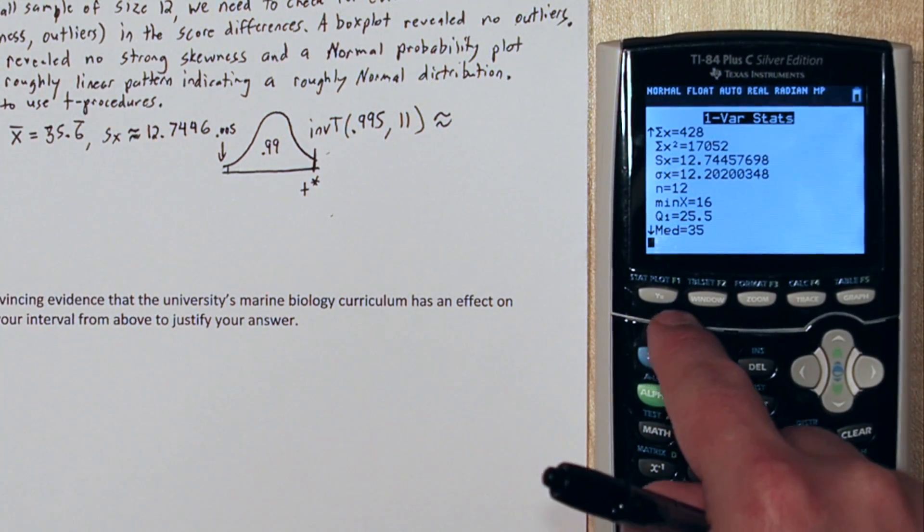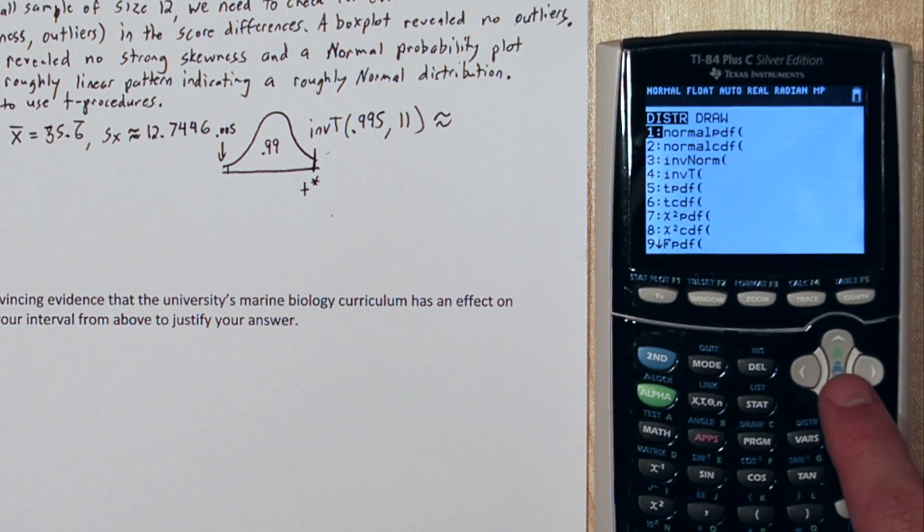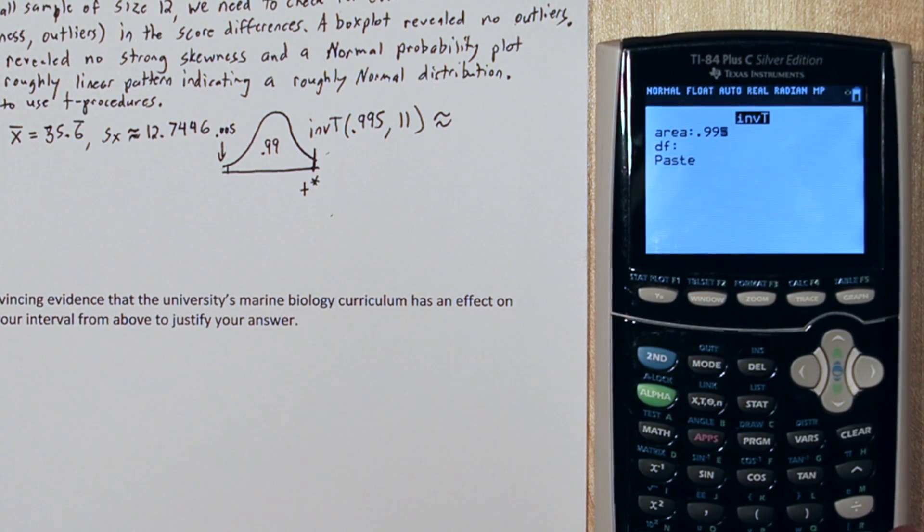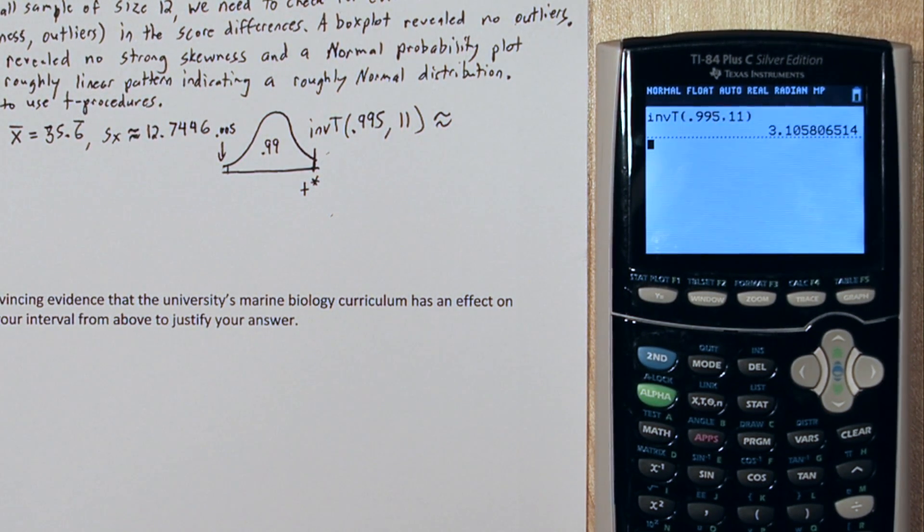To do this on the calculator, press second, then the vars button. This gets you to the distribution menu. Go down to inverse t and type in the area of 0.995 and degrees freedom of 11. When we press enter, there's our t star, 3.1058 approximately.